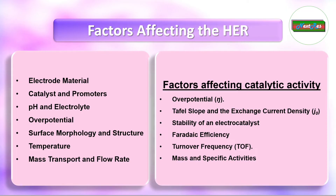The overpotential is the additional potential applied to initiate the HER compared to the thermodynamic potential; it represents the energy required to overcome the activation barrier of the reaction. Lowering the overpotential is crucial to improve efficiency and reduce energy loss. The surface morphology and structure of the electrode play a significant role — high surface area structures such as nanoparticles, nanowires, or hierarchical structures provide more active sites, leading to enhanced HER kinetics. Increasing the temperature also generally increases the rate of reaction, though optimization is essential. Adequate mass transport of reactants and products to and from the electrode surface is also crucial.